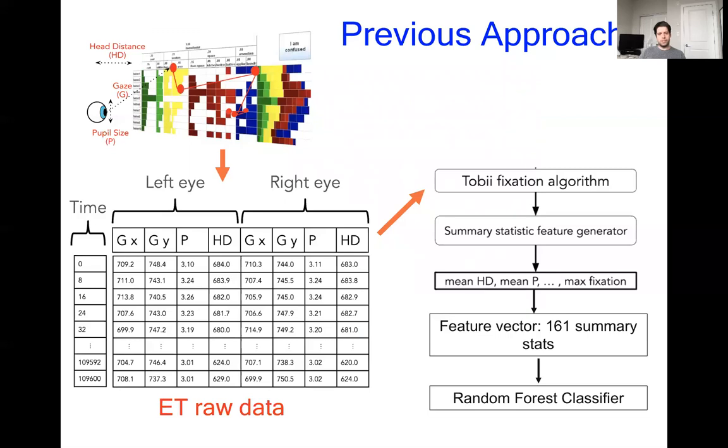What the previous method by Wale did was process these raw sequences into feature vectors of 161 summary statistics, which were then processed by a random forest classifier to predict either confused or not confused.